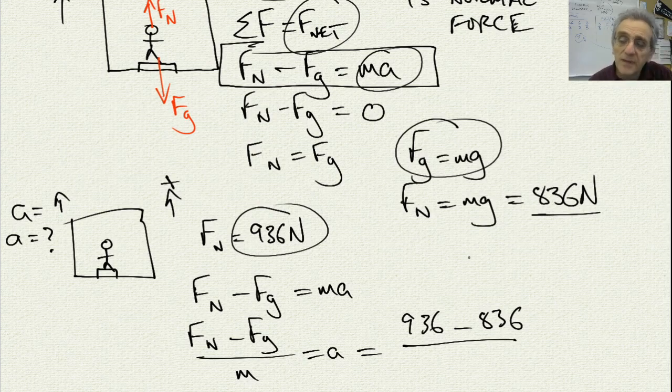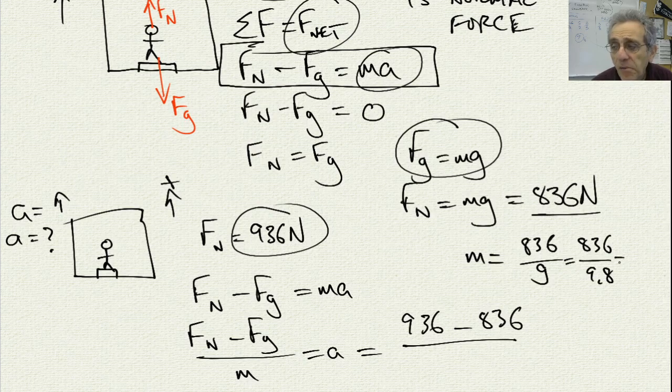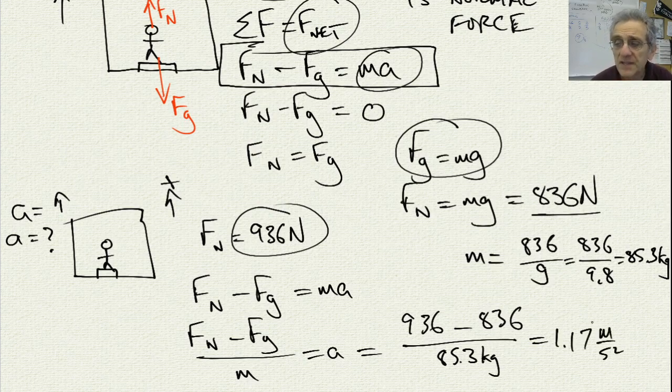Well, that's not given, but it kind of is indirectly. You can say that M is equal to 836 divided by G, or 9.8. So, 836 divided by 9.8 gives you 85.3 kilos. Now, you can put that 85.3 kilos on the bottom, and you'll get an acceleration of 1.17 meters per second squared, and that is up, because it's positive.